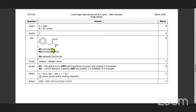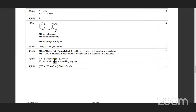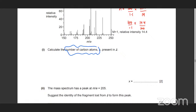Number of carbon atoms — question number 4. That's coming out to be: you're getting the formula 14.4 divided by 100, into 100 over 1.1. That's giving you 13.1. So you're getting 13.1 and your number of carbon atoms is going to be approximately 13.